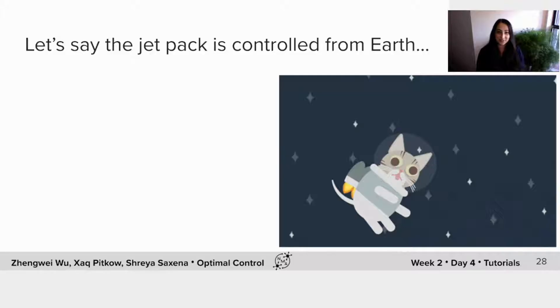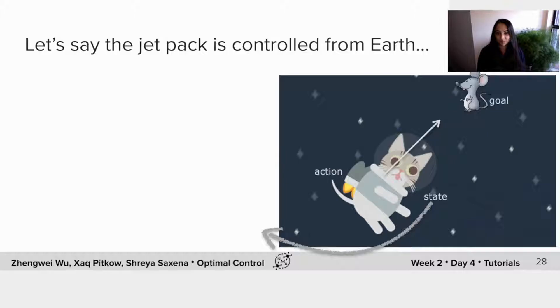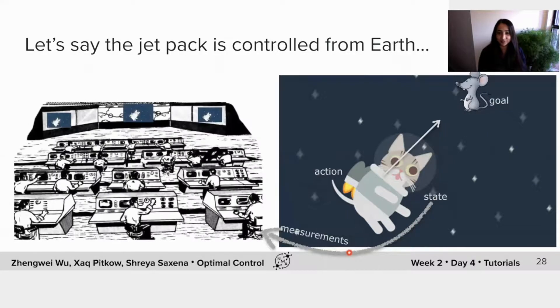Here we're going to consider a pretty important problem where this jetpack that we're trying to control is actually controlled from Earth. The body position is recorded by a mission control station at Earth, and this sends the desired actions to the jetpack in order for the state to get to the goal.